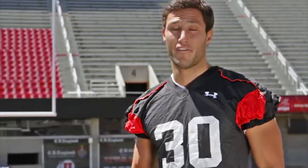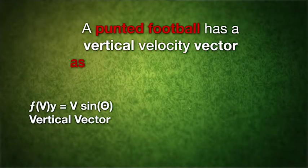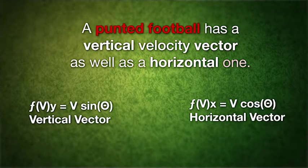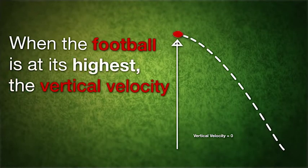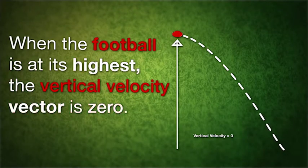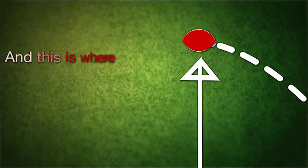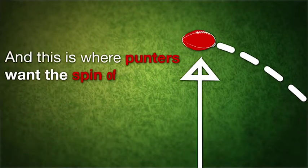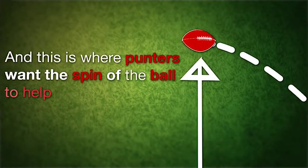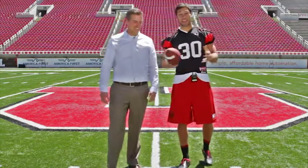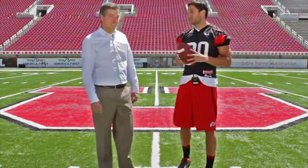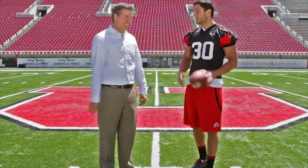So there's a lot of science behind the game of punting. A punted football has a vertical velocity vector as well as a horizontal one. When the football is at its highest, the vertical velocity vector is zero. And this is where punters want the spin of the ball to help hold it in the air as long as possible. The whole point of this is for our opponents to get lousy field position, so we win more games.